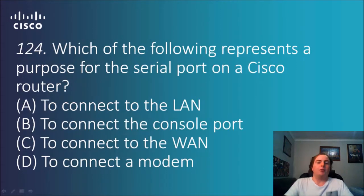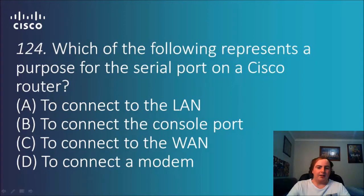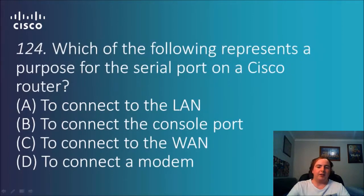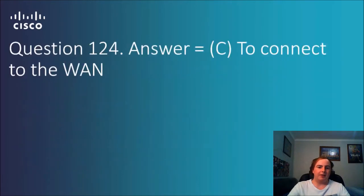Question 124: Which of the following represents a purpose for the serial port on a Cisco router? Options: connect to the LAN, console port, WAN, or modem. The answer is C — to connect to the WAN. Connecting to the LAN you wouldn't need a serial port because you can just use generic Ethernet cables, and modem uses a different one.